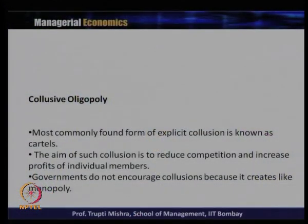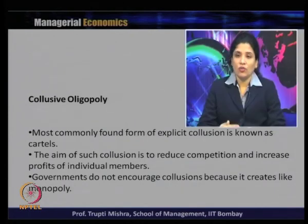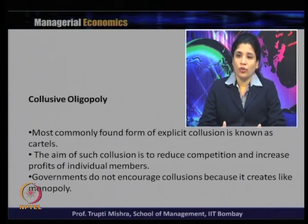Tacit collusion comes into picture because there is no legalized version of collusion. After the cartel — taking OPEC as an example — you will find there is no legal form of cartel; whatever form of collusion exists is in the tacit form. In explicit collusion, firms formally agree to work together for joint profit maximization. The most common form of explicit collusion is generally known as a cartel, whose aim is to reduce competition and increase profit of individual members.